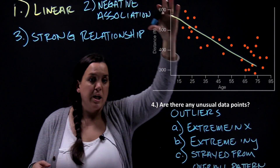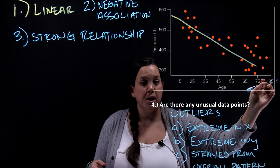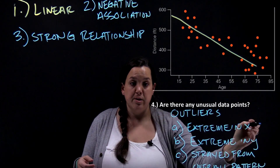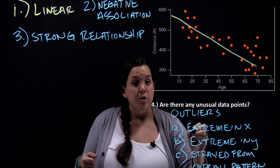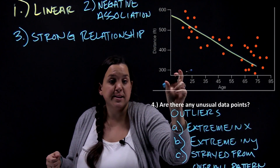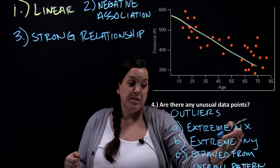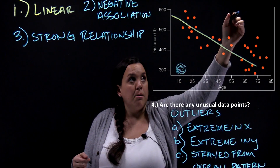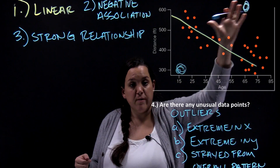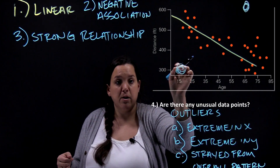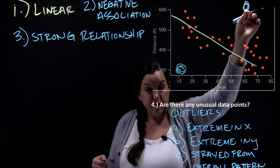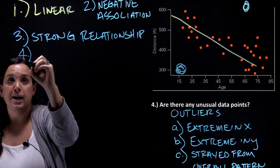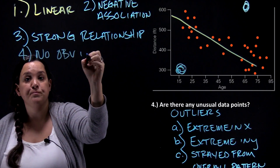Looking at this scatterplot, we have no values that are extreme in x — no people who are really young or really old. We have no outliers extreme in y — nobody who can see really far and nobody who can't see far at all. Straying from the overall pattern would require a point to fall in the blank space, such as a young person who can't see far or an old person who can see far away. There are no such values, so in general we would say there are no obvious outliers.